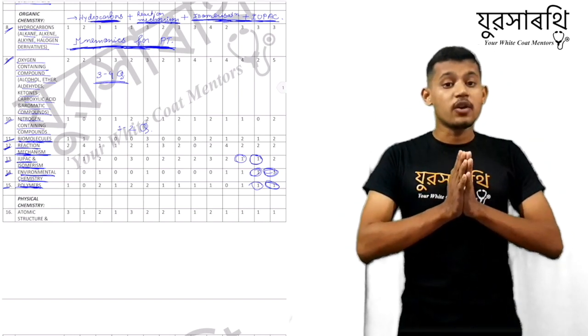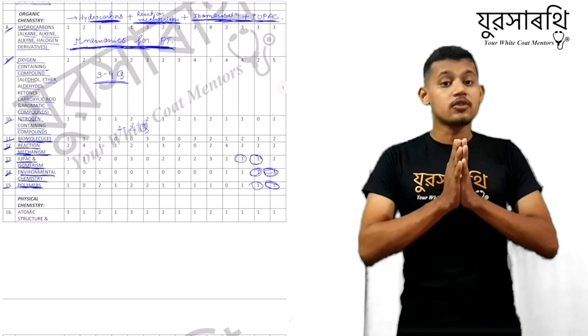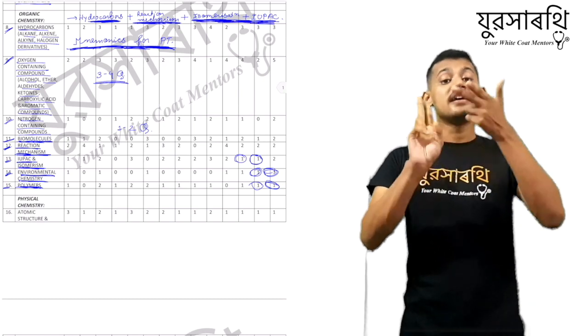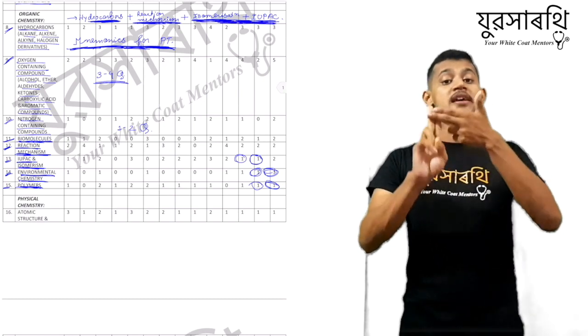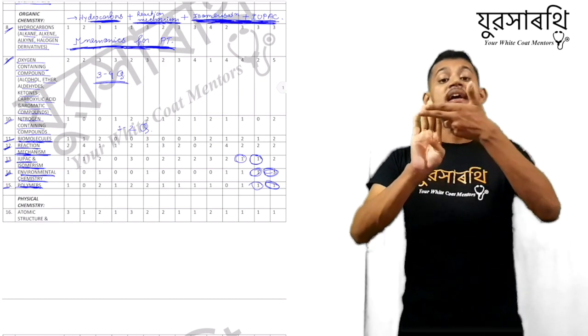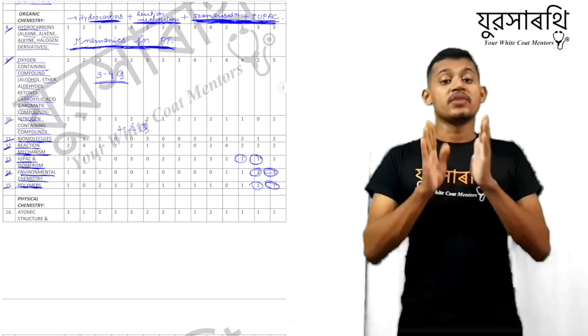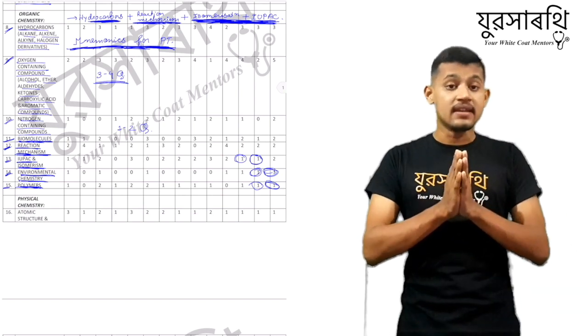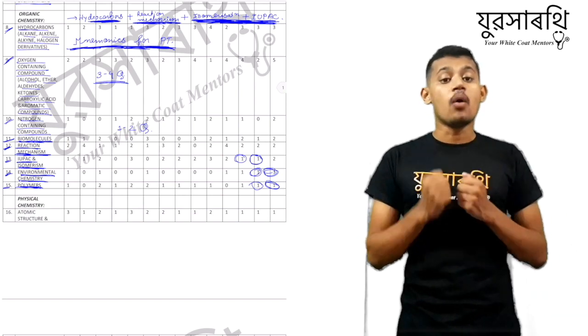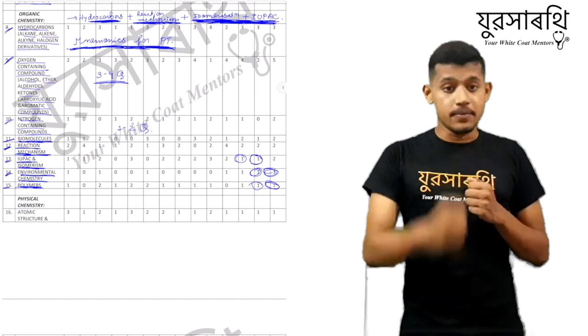So here I come to the end of the organic portion. The basics of organic chemistry are: hydrocarbons, reaction mechanism, and IUPAC nomenclature and isomerism. If we know these things well, then organic chemistry is at our grip.